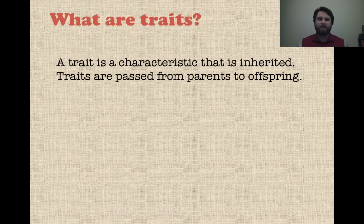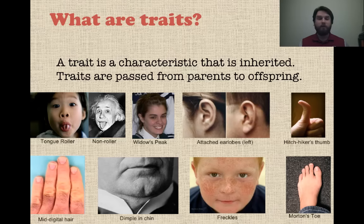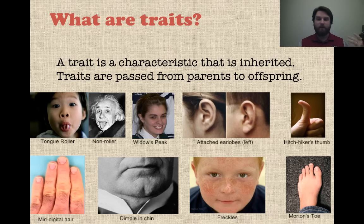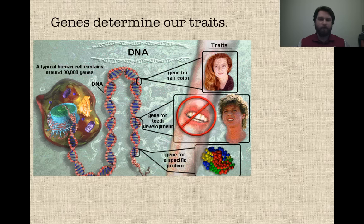That gives rise to the study of how genetic traits are passed from parents to offspring — that's called heredity. A trait is a characteristic that is inherited and passed from parents to offspring. In humans, examples include the ability to roll your tongue, whether you have a widow's peak in your hairline, and whether you have attached or non-attached earlobes. All these are traits that can be inherited.